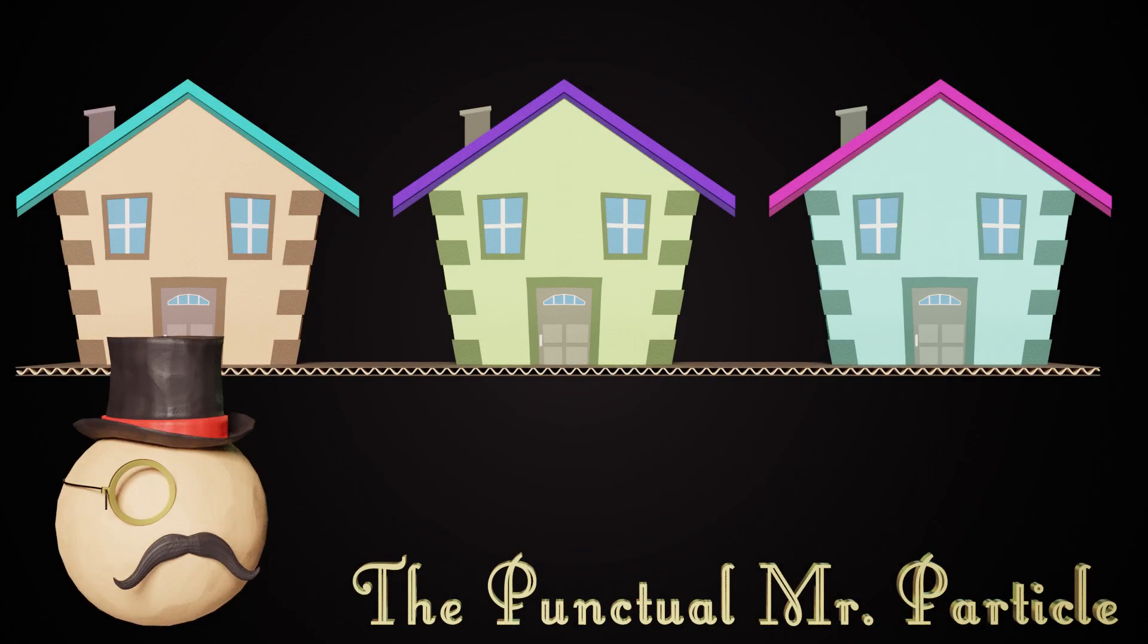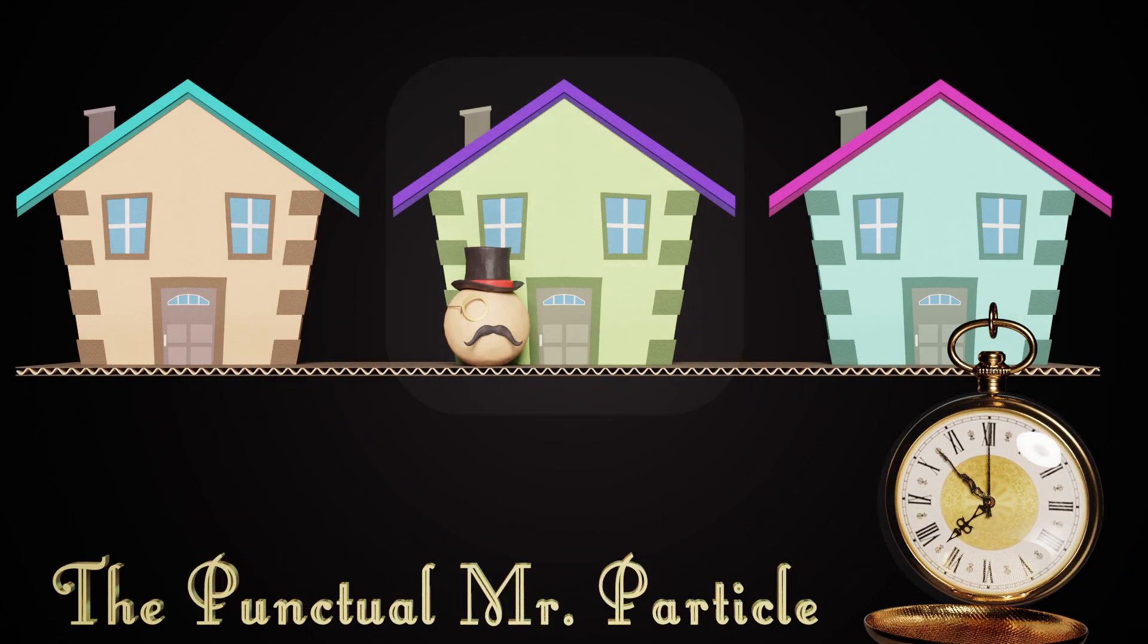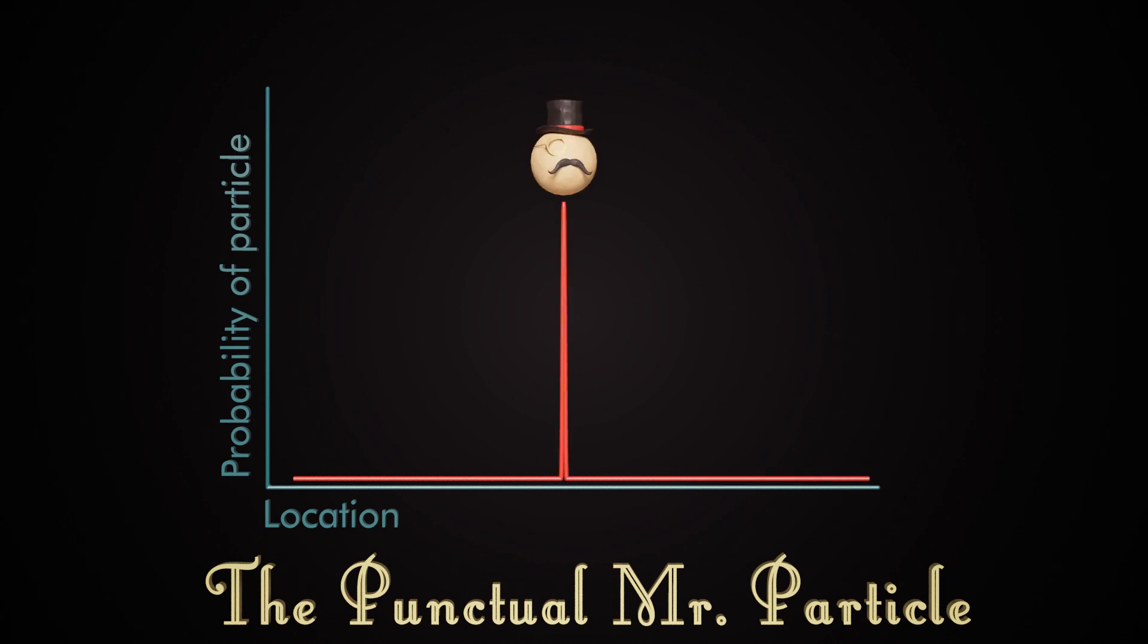Particles exist, by definition, in a single place at a single instant point in time, which can be represented by a graph illustrating the probability of finding a particle at a given point. It looks like a spike: 100% at that one specific position and zero everywhere else.